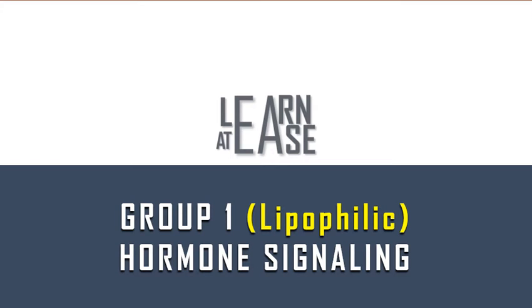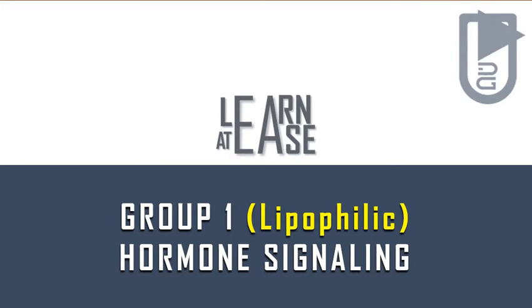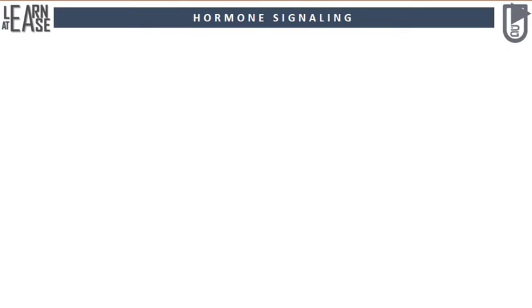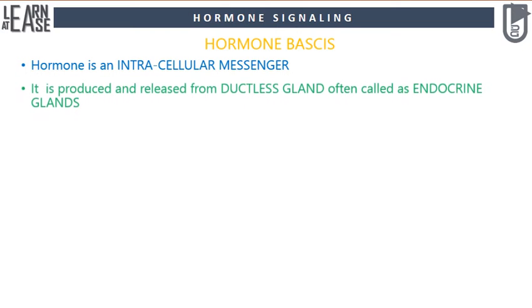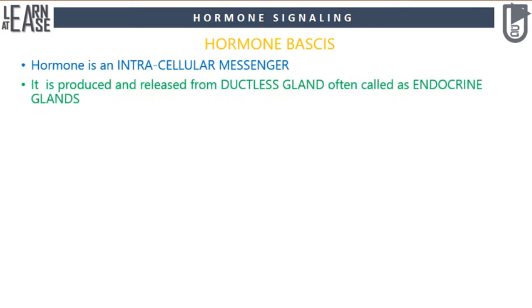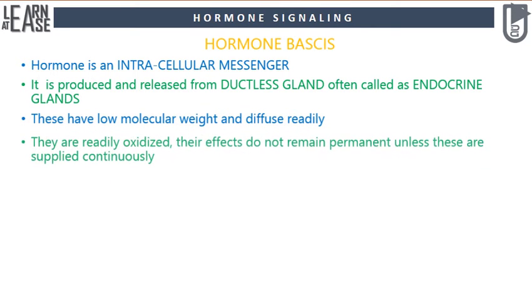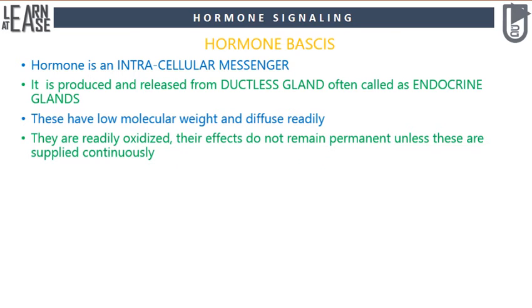Welcome to my YouTube channel Learn at Ease. In this video I will explain the mechanism of Group 1 hormone signaling. As discussed in a previous video, a hormone is an intracellular messenger produced and released from ductless glands, often called endocrine glands. These have low molecular weight and diffuse readily.